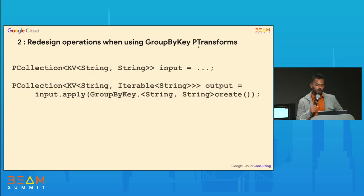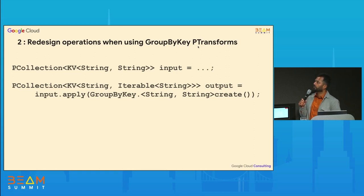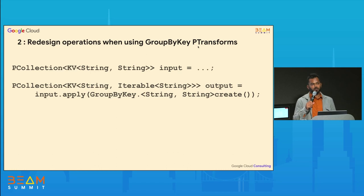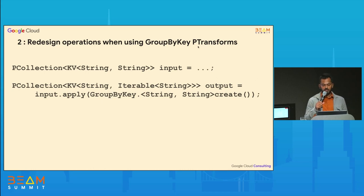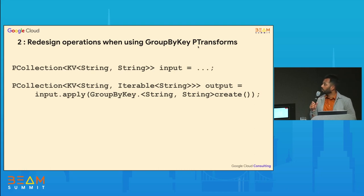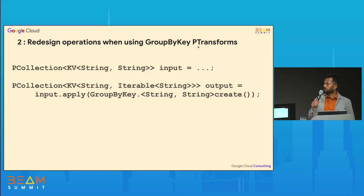The next best practice is about operations or transforms you do after a group-by-key transform. Group-by-key is a very fundamental PTransform in Beam which groups values that share the same key for each window. You have an input PCollection of key-value pairs of strings, and once you perform a group-by-key, you get a key — the common key — and then an iterable of values that share that same key.